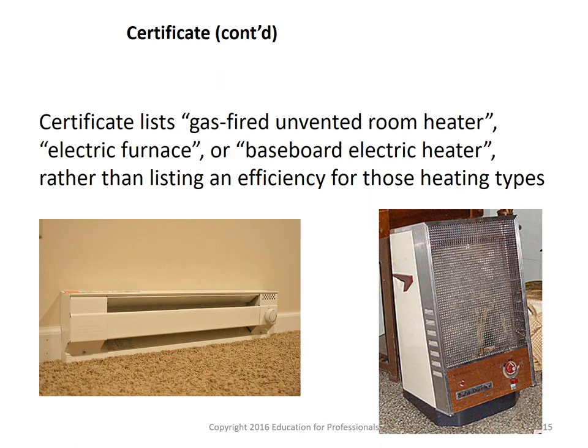The certificate lists specific heating equipment types such as gas-fired unvented room heaters, electric furnaces, or baseboard electric heaters rather than listing efficiency ratings for those types, since there isn't really a way to gauge their efficiency. For other equipment such as air conditioners, efficiency values like SEER ratings exist because the equipment has been tested and achieves a certain energy rating, but this hasn't been done for the older pieces of equipment.